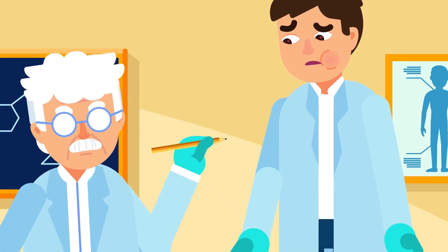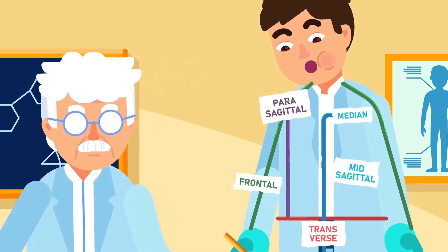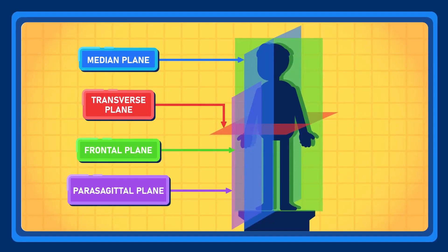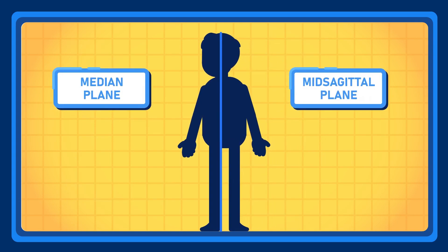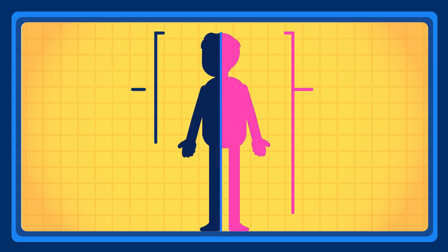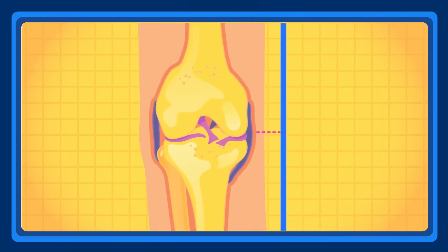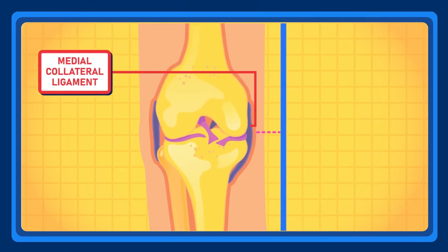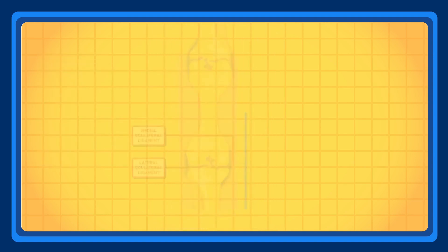After establishing the standard positions, we need to know the planes that are used to divide the body and the terms to describe the position of an object on the body. The median plane, also called the mid-sagittal plane, is a vertical plane that passes straight through the centre of the body in a longitudinal direction. It divides the body into equal right and left halves. Structures that are near the plane are referred to as medial, whereas structures that are further away from the median plane are called lateral.